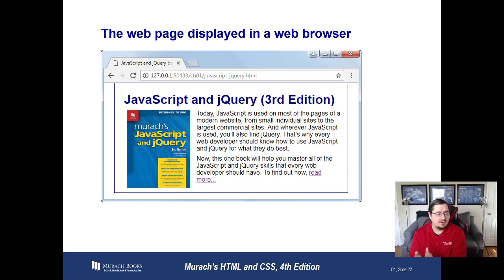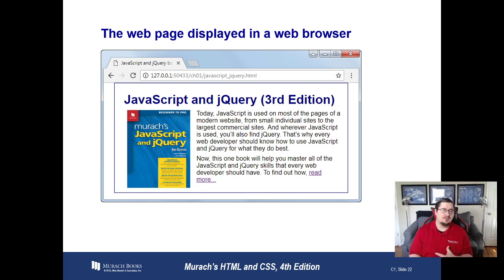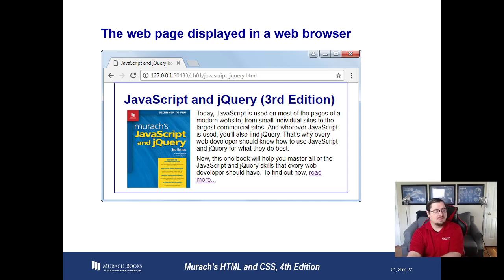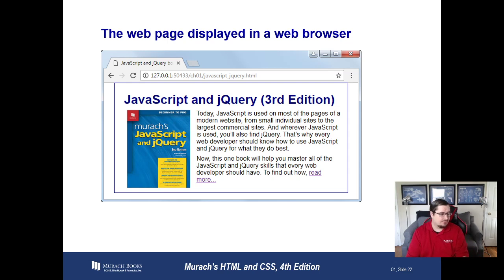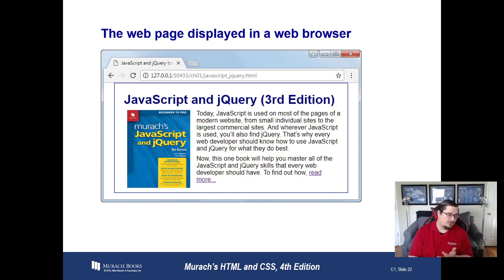So the key thing to remember: HTML is used to define the structure of the page, CSS is used to style the web page and make it look good, and JavaScript is used to provide interactivity — things the user can do once the page is loaded. All of that code — HTML, CSS, and JavaScript — is executed in the browser, not on the web server. The web server just says, 'you want this file? I'll give it to you.' The code runs on the end user's device, whether it's a smartphone, tablet, or desktop.